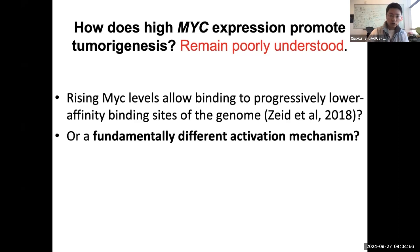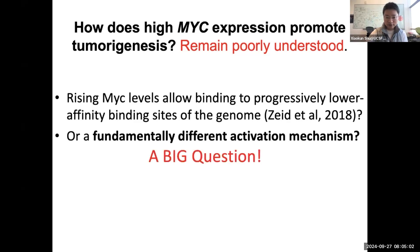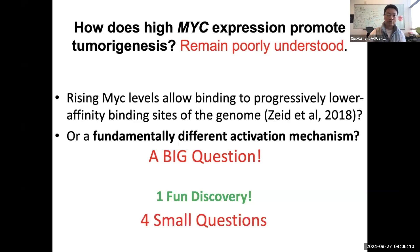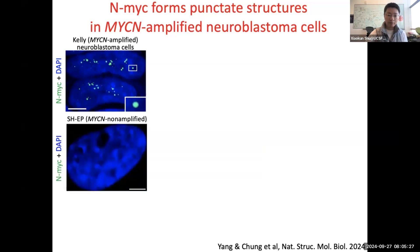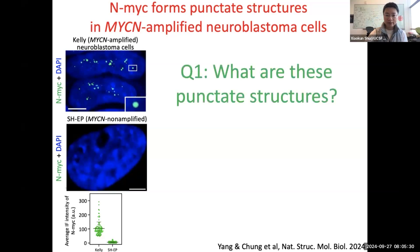This is the so-called MYC invasion hypothesis. We asked: is there a fundamentally different activation mechanism? We were lucky to have an interesting discovery. Many years ago, we found that in the MYCN-amplified cancer cell, the MYC protein forms punctate structures, which are absent in the non-amplified cells. This leads us to ask the first question: what are these punctate structures and how do they form?